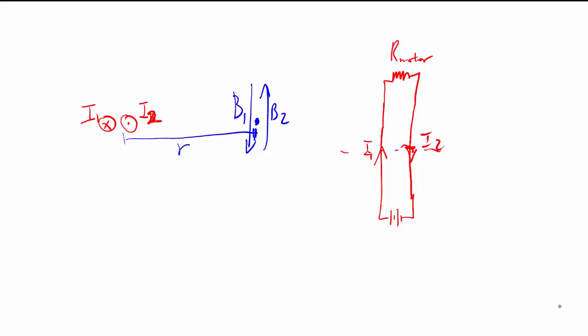So it all cancels out, in the case of having the two opposite currents right beside each other. So when you add up these two magnetic fields, the B total, which is B1 plus B2 using the vector sign, you must add up to zero. And that's part B.